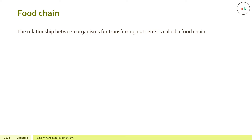A herbivore gets nutrients by eating plants and is thus called a consumer. A carnivore or omnivore eats herbivores to get their nutrients. For example: a water plant is eaten by a pond snail, the pond snail is eaten by a fish, and the fish is eaten by a kingfisher.